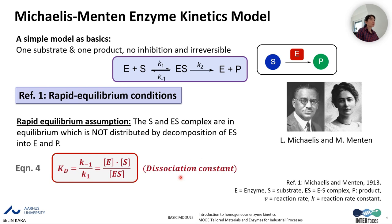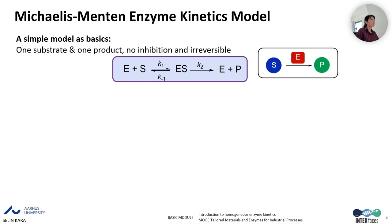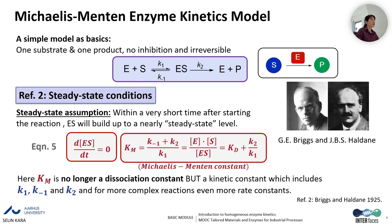They worked with a dissociation constant KD, which is equal to K-1 divided by K1, equal to E multiplied by S divided by the ES complex. About 10 years later, Briggs and Haldane came up with a new assumption based on steady-state conditions, which states that within a very short time after starting the reaction, the ES complex will build up to a nearly steady-state level.